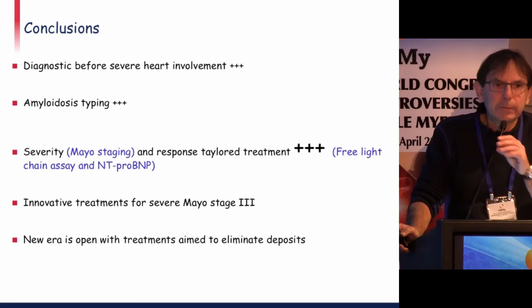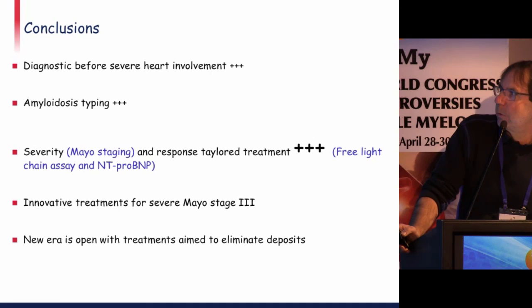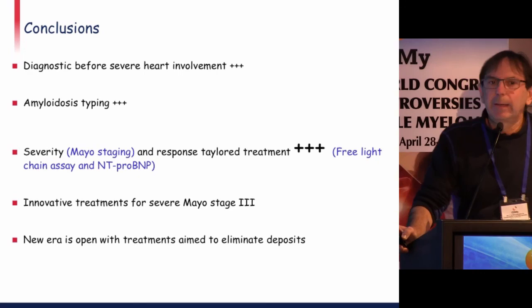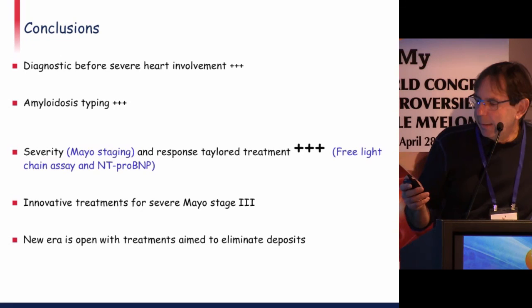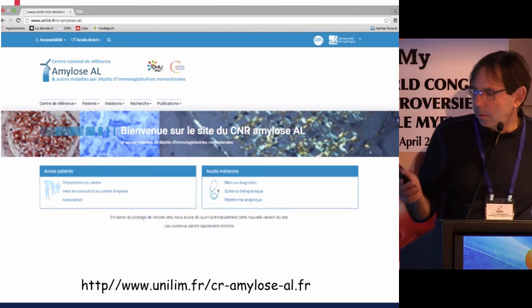In conclusion: diagnosis must be done before severe heart involvement; amyloidosis must be typed; treatment must be tailored with severity and hematologic response in mind. We need innovative treatments for severe Mayo stage 3 disease. A new era in amyloidosis is opening with treatments aimed at eliminating deposits. Thanks to all members of the French amyloidosis network, and I hope to see you in Uppsala in July.